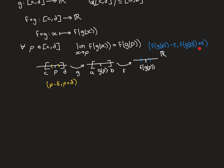If for all ε > 0 you can find such a delta interval mapped entirely into the epsilon interval, that shows the function gets and stays indefinitely close to f(g(p)) as x approaches p. Note I don't need to exclude the centrepiece from my delta intervals: since p maps onto f(g(p)) — the centrepiece of the epsilon interval — it is always guaranteed to lie inside it for any ε > 0.